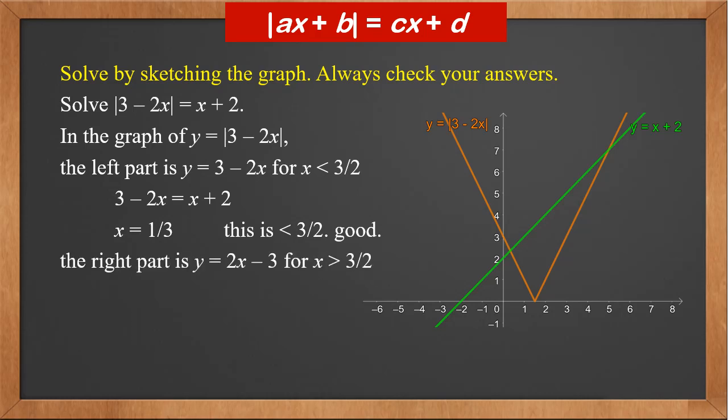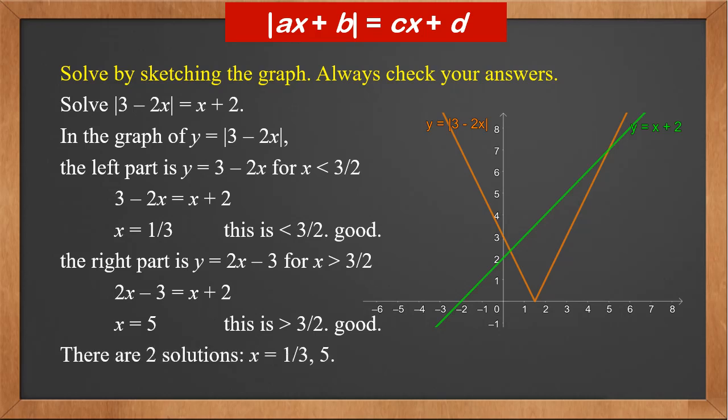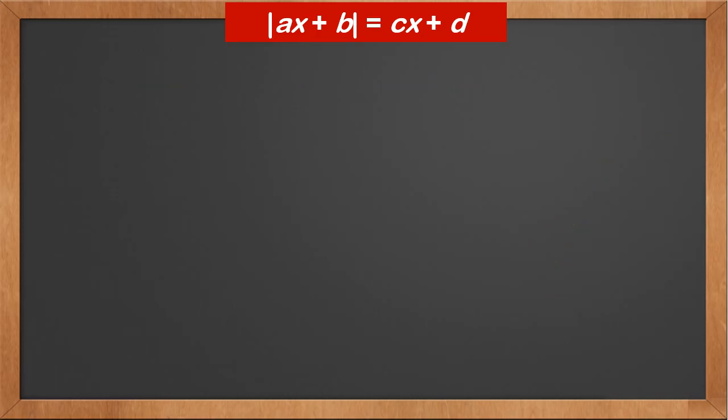The right part is two x minus three for x greater than three over two. So we solve two x minus three equals x plus two. Therefore, x is five. It is greater than three over two, so it's valid. Therefore, there are two solutions: x is one third or five.